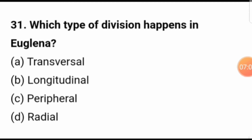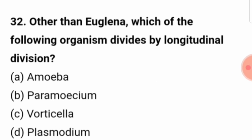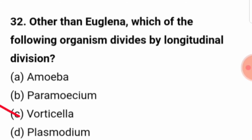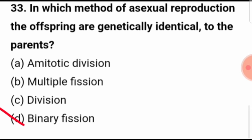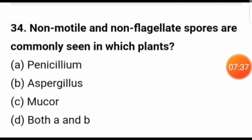Which type of division happens in Euglena? In Euglena, longitudinal division occurs. Other than Euglena, which organism divides by longitudinal division? That is Vorticella — Vorticella also divides by longitudinal division. In which method of asexual reproduction are the offspring genetically identical to the parent? That is in binary fission. Non-motile and non-flagellated spores are commonly seen in penicillium and aspergillus.